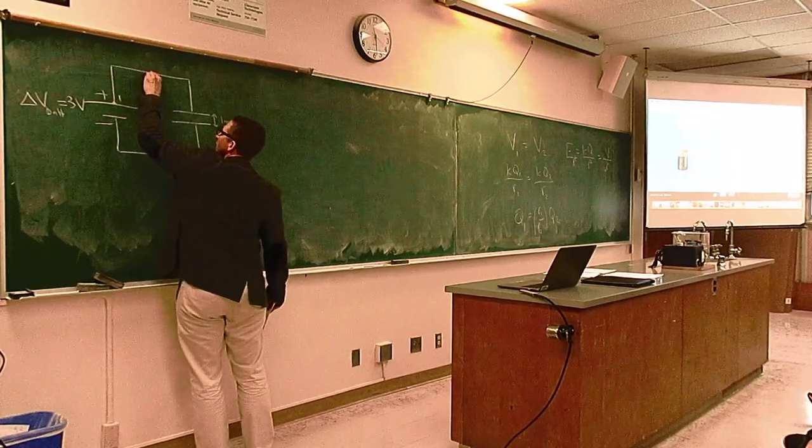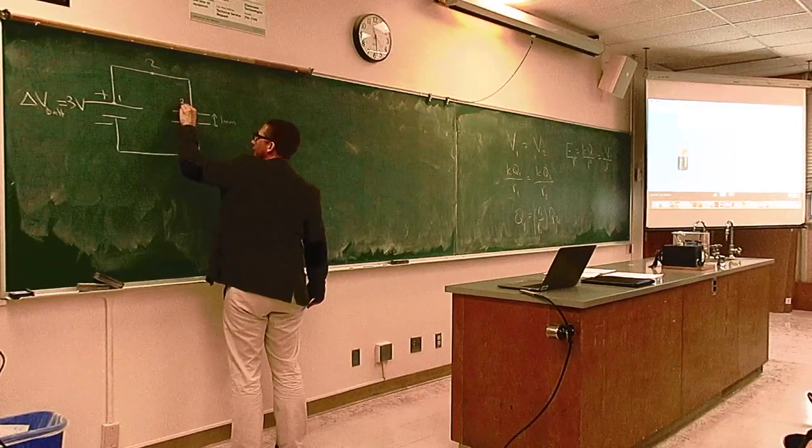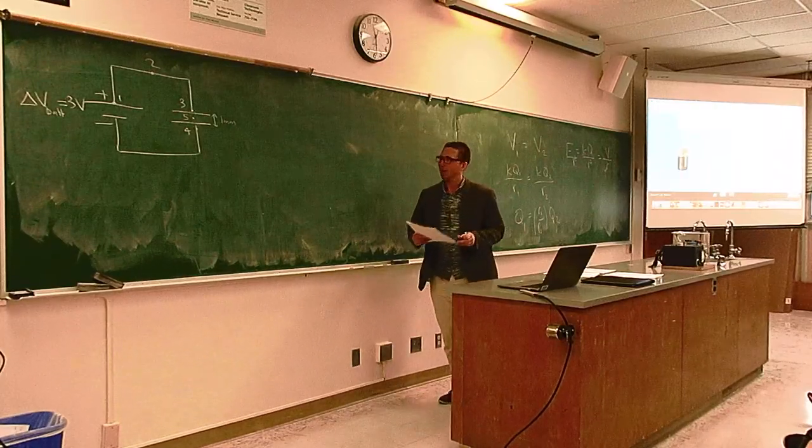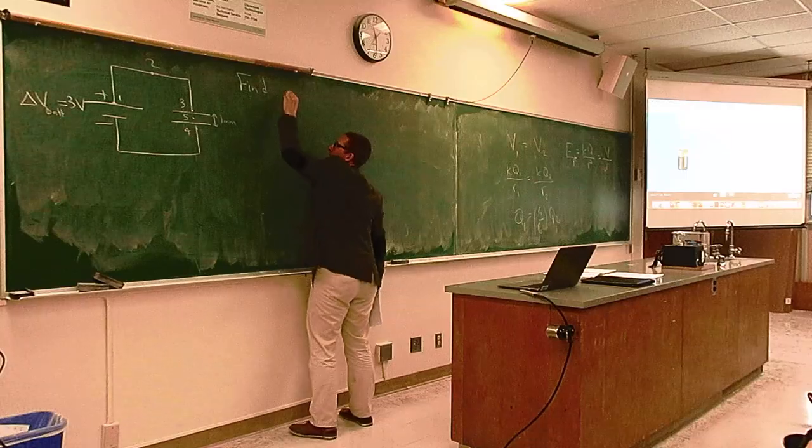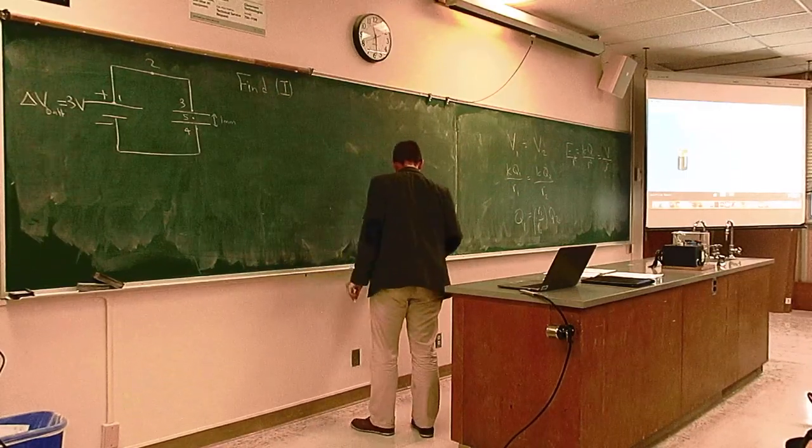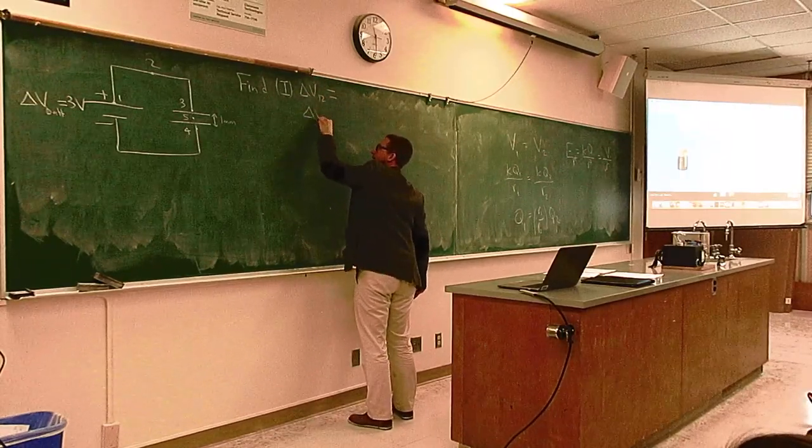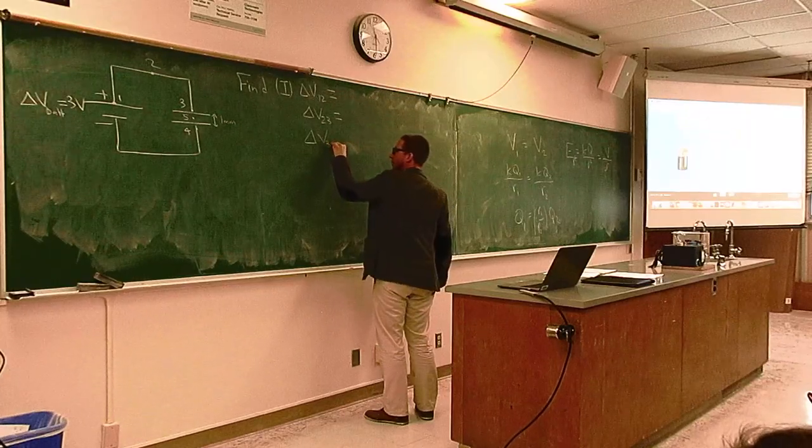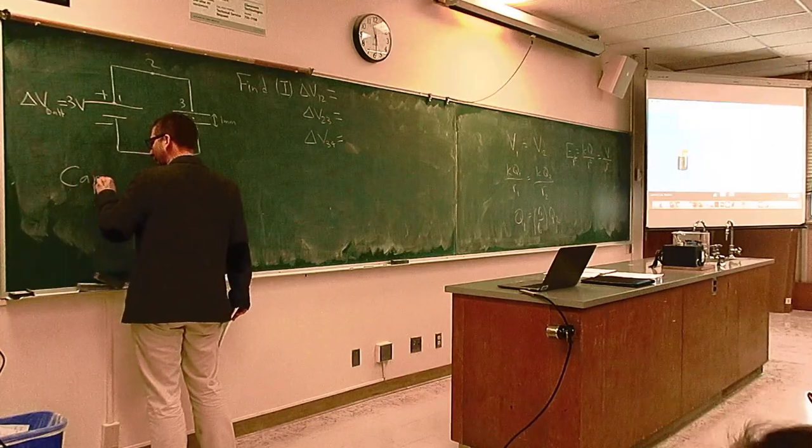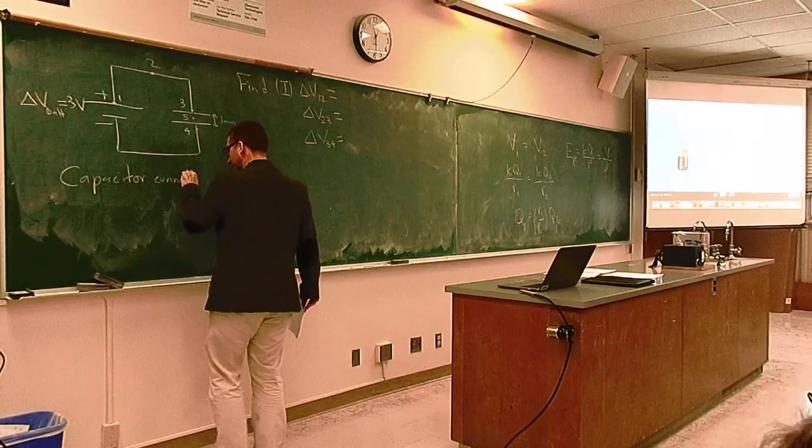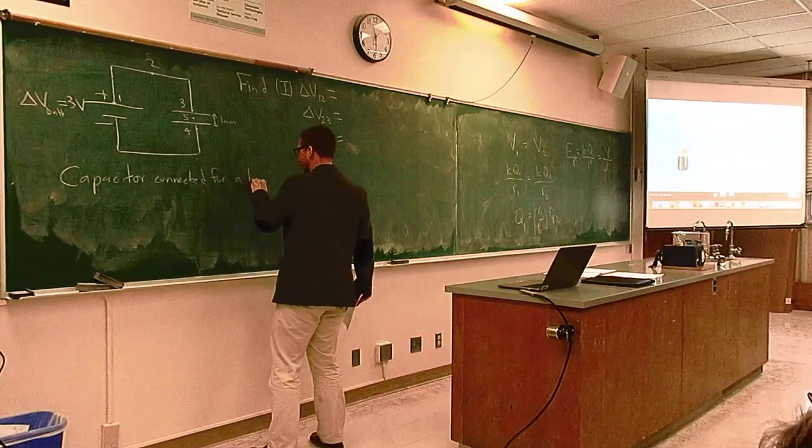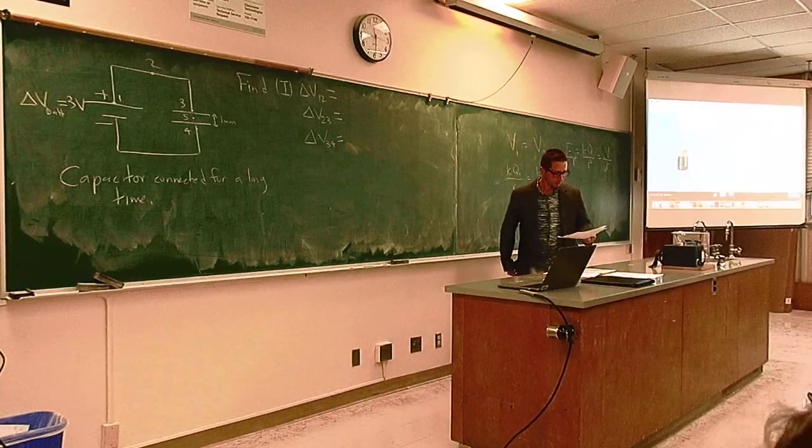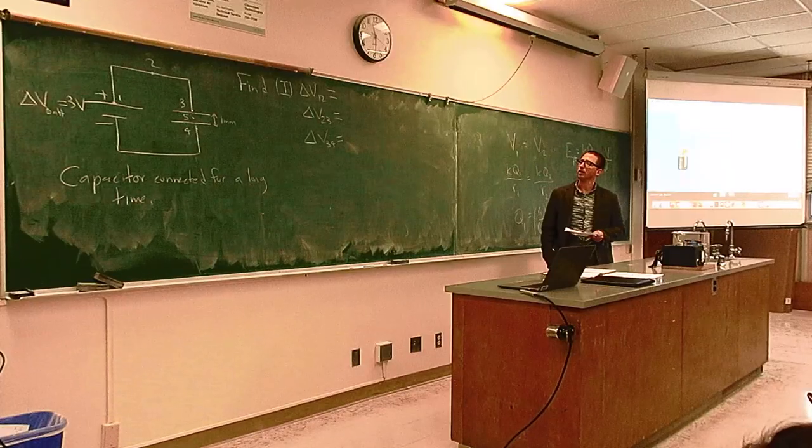That would be a good design. So let me label a couple points in the circuit. I'll call one, two, three, four, and then the fifth point is just a point in space that's right in between the two plates of the capacitor. So I want you to find, first of all, delta V one two, delta V two three, and delta V three four. So this is a capacitor connected for a long time.